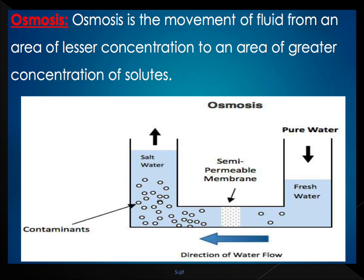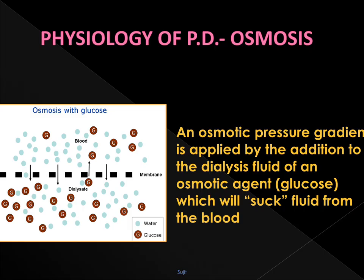Osmosis is the movement of fluid from an area of lesser concentration to an area of greater concentration, as shown by the example of fresh water and salt water. In peritoneal dialysis, the peritoneal capillaries act like a semipermeable membrane containing blood with a higher concentration of uremic solutes. Dialysate is instilled into the peritoneal cavity, and the glucose inside creates an osmotic force which draws fluid from the blood, leading to osmosis.